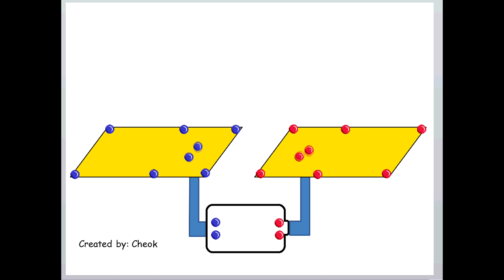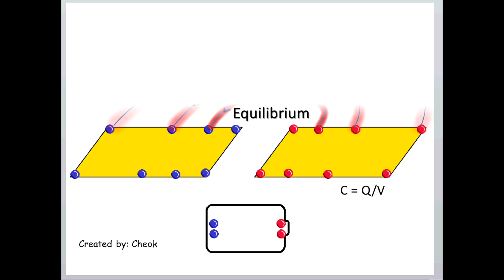Eventually, the net force along the conductor is zero and the charges stay in equilibrium. This is when the plates have the same potential difference as the voltage source. And the capacitance is defined as the ability to store charges on a per-volt basis.